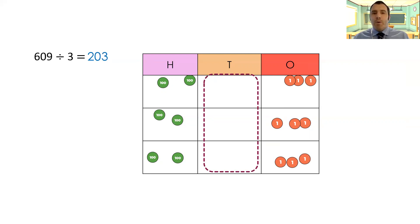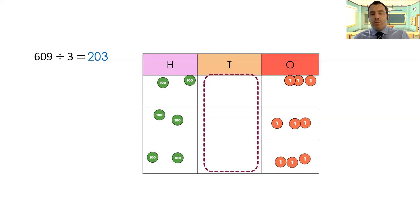It's really important when we're dividing, if we have something that's got no value in it, that we put a zero in — certainly if it's in the middle of a number. If it's at the beginning of a number we don't need to worry too much. So if there were no hundreds and it was all tens and ones we'd be okay, but if it was all hundreds and tens we'd still need a zero in the ones column to make our answer correct.